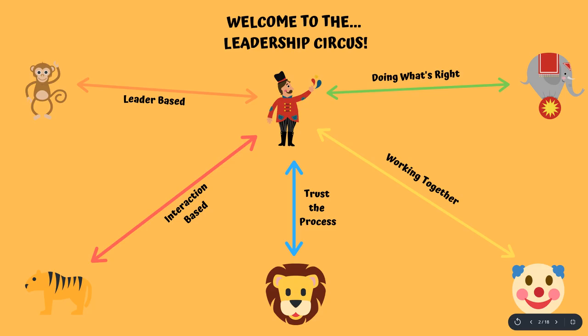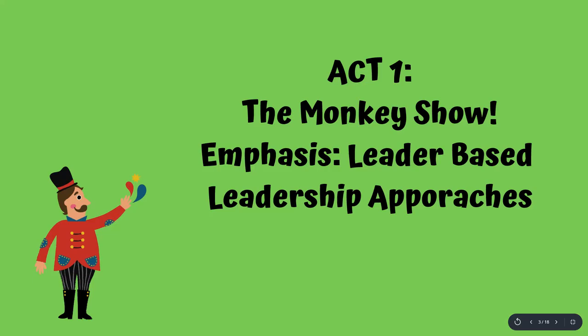You've got the leader right here in the middle for the leadership circus — the ringmaster. I broke down the 14 or 15 leadership processes into five groups that I thought fit best: leader-based, interaction-based, trust the process, working together, and doing what's right.